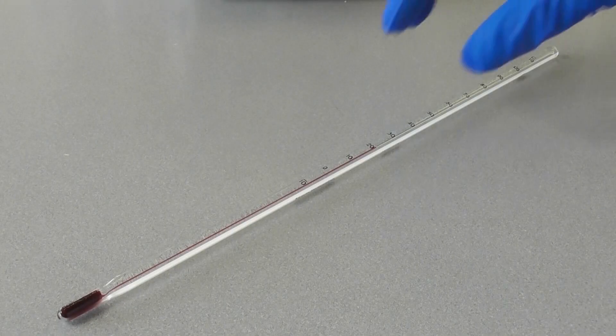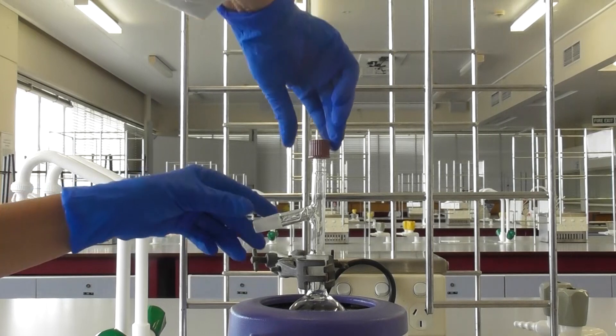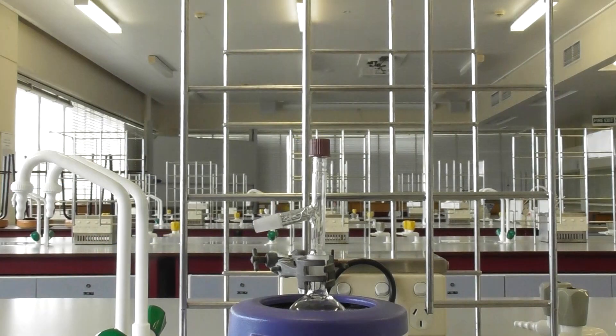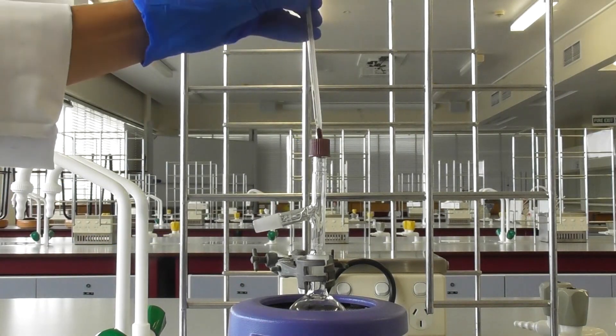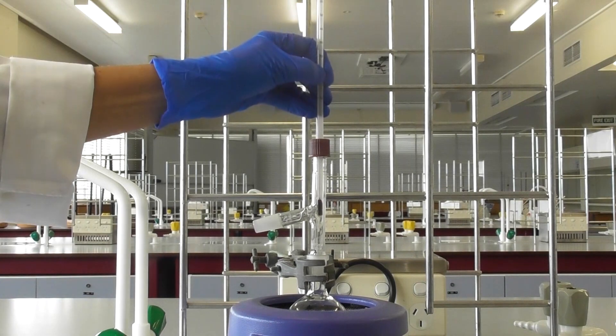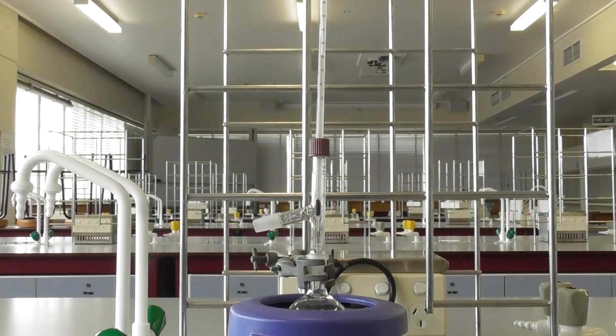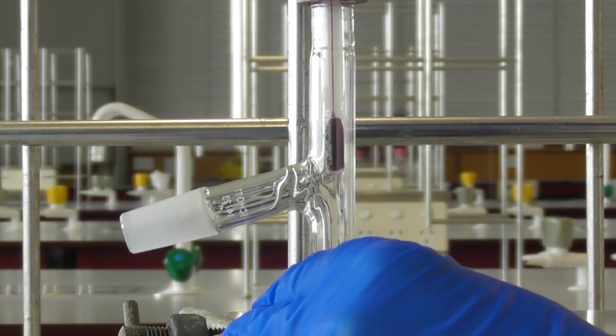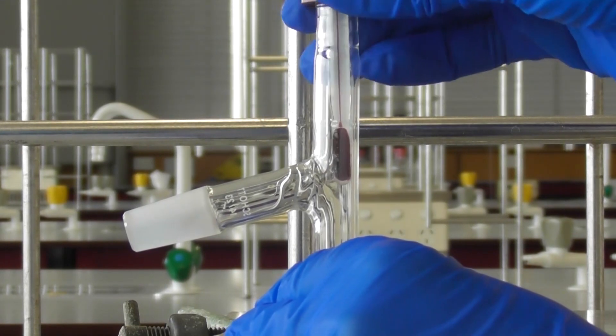Next, you will need a thermometer which should fit in the opening in the top of the still head. Loosen the cap and push the thermometer through the seal. Adjust the height of the thermometer until the bulb sits at the point where the still head branches. Then tighten the cap.